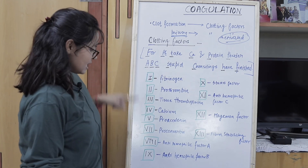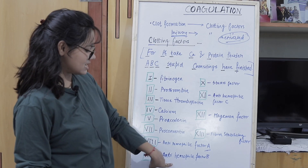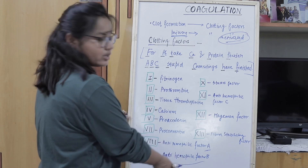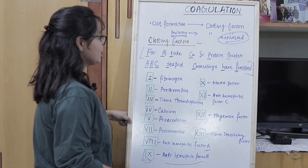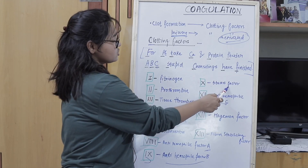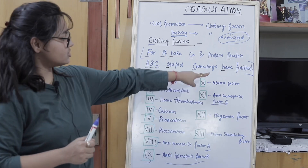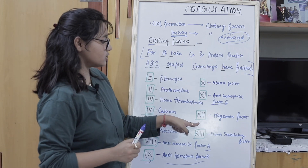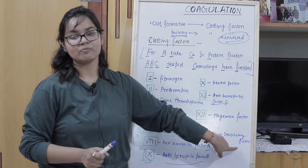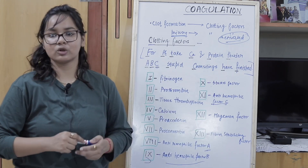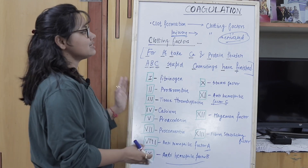In the mnemonic, A stands for anti-haemophilic factor A, which is clotting factor 8. B stands for anti-haemophilic factor B, which is clotting factor 9, also known as the Christmas factor — so C also stands for the Christmas factor, both referring to factor 9. F stands for the Stuart factor, which is clotting factor 10. The second C stands for anti-haemophilic factor C, clotting factor 11. H of 'have' stands for the Hageman factor, clotting factor 12. And F of 'finished' stands for fibrin stabilizing factor, clotting factor 13.